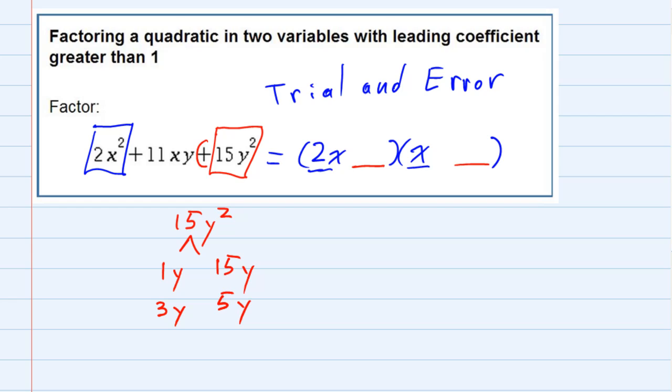Now since it's a positive 15y squared, we know that the signs have to be the same. And they have to be the same so that eventually things are going to add up to the middle term, which is our positive 11xy. So I'm going to go ahead and put in my pluses since I know those signs. And now we're just going to plug them in and see which combination works.